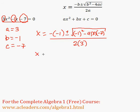Okay, so here we have minus negative 1. Negative negative makes a positive, plus or minus. Negative 1 squared is just positive 1. Negative 4 times 3 is negative 12. Negative 12 times 7, that's positive 84. All over 2 times 3, which is 6.